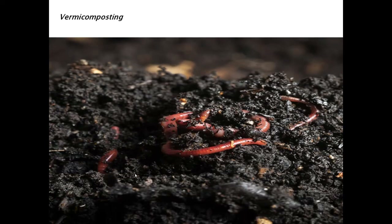Vermicomposting is the method of making compost by using red worms or earthworms. By making different layers of soil and organic matter and using earthworms, we can convert this organic matter into compost. This process is called vermicomposting and it is rich in plant nutrients.